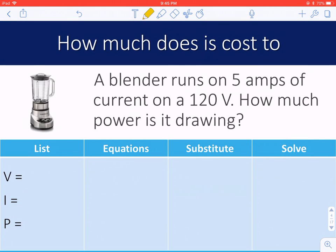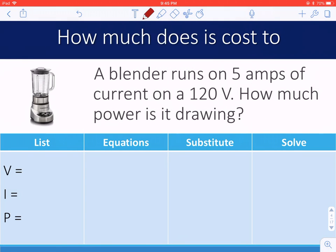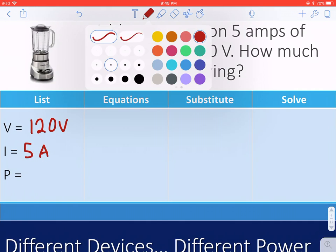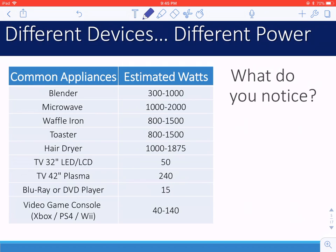So for example, if you have a blender that runs on 5 amps of current, you know that I is 5 amps. And 120 volts, V is 120 volts, that means we're looking for the power. Power is just current times voltage, I times V, or 5 times 120, leaving you with 600 watts of power. On the next slide, you'll notice different devices or different appliances that we use, use different amounts of power.